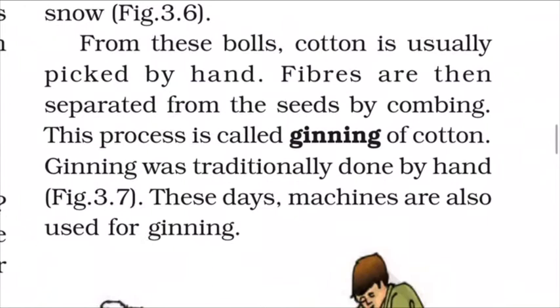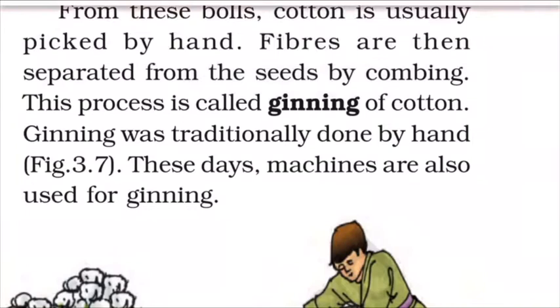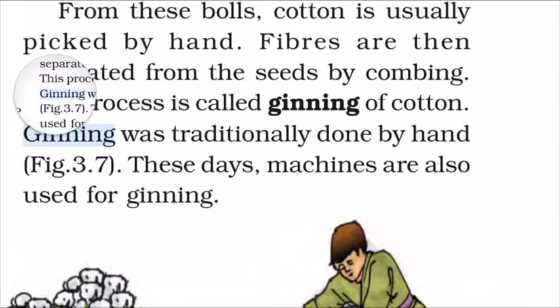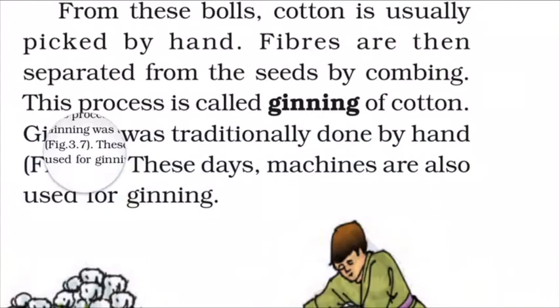The cotton is taken out from the boll by hand. Fibers are then separated from the seeds by combing. This process is called ginning of cotton. Ginning was traditionally done by hand, but these days machines are also used for ginning.